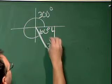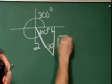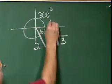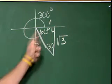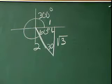And with the 30-60-90 triangle, the hypotenuse is two. This side is the square root of three, and the x side is equal to one.